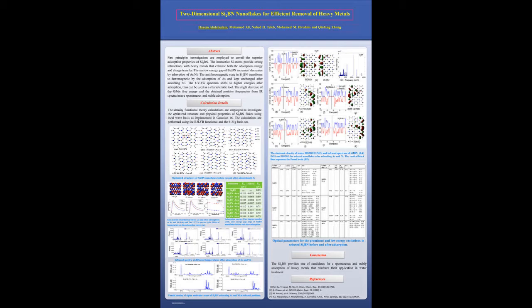However, the narrow energy gap of SI2BN decreases by adsorption of arsenic and nickel. The anti-ferromagnetic state in SI2BN transforms to ferromagnetic by the adsorption of arsenic and kept unchanged after adsorbing nickel.